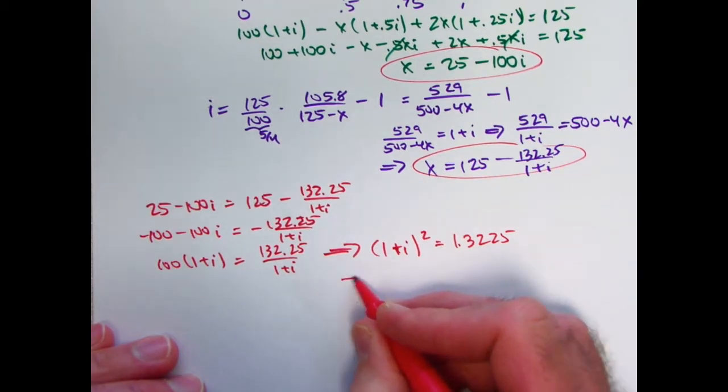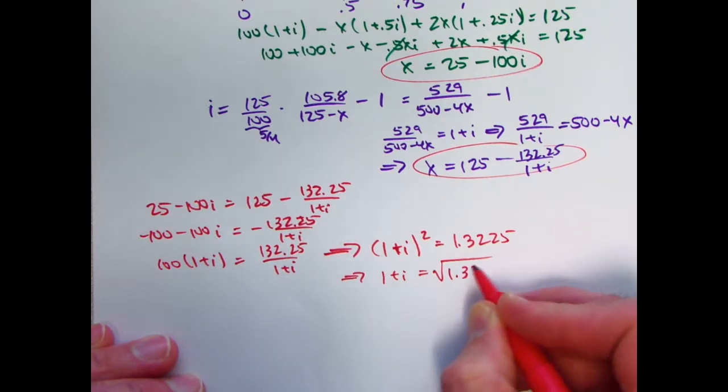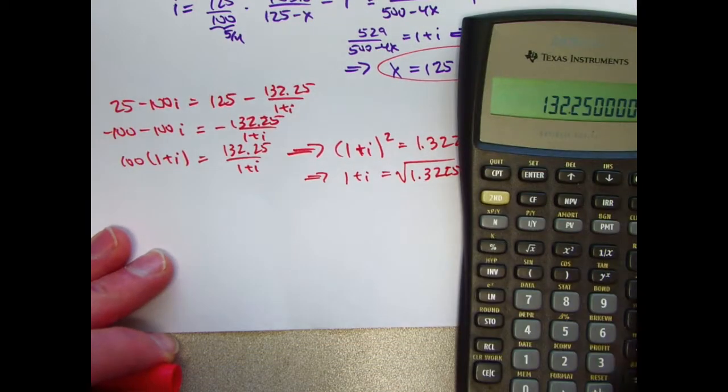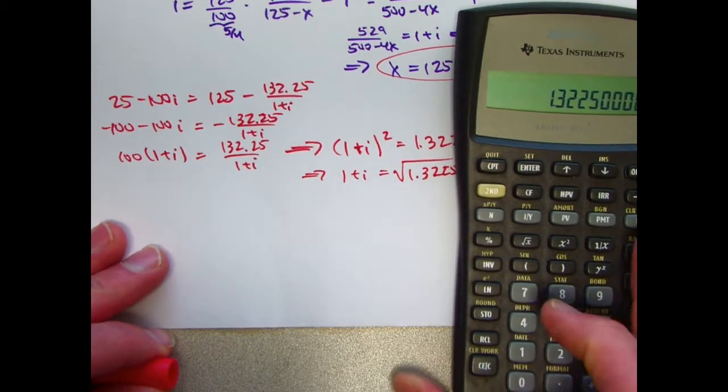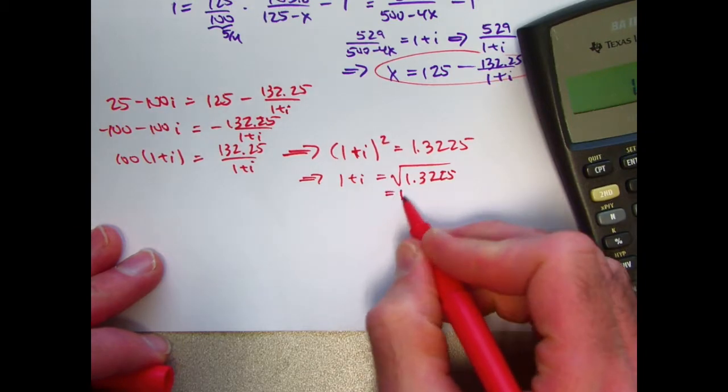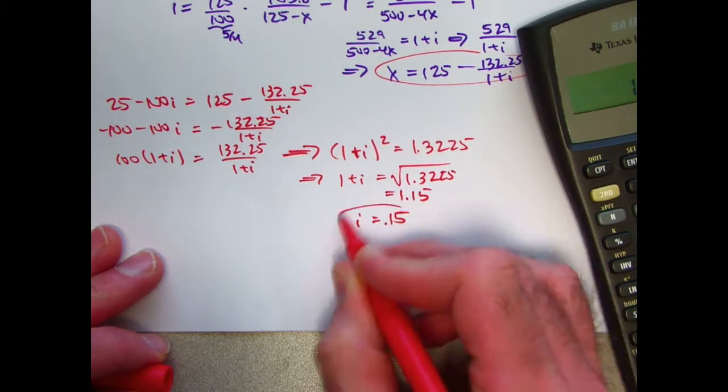I want to take the positive square root. 1 plus i is the positive square root of 1.3225, which turns out to be a pretty nice number actually. Take the square root of this thing. You get 1.15. i is therefore 0.15 and that is the correct answer.